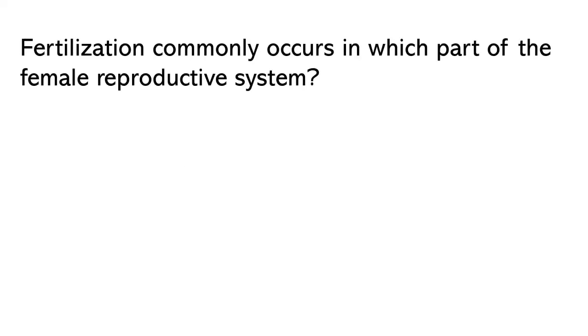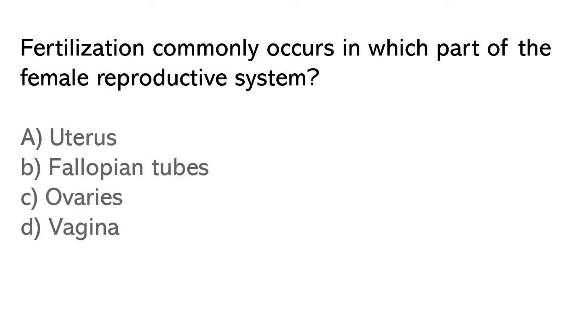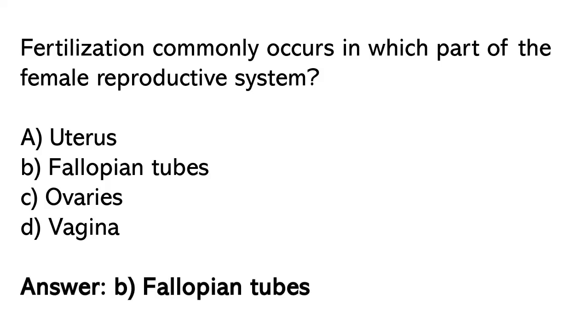Fertilization commonly occurs in which part of the female reproductive system? Options: A) Uterus, B) Fallopian tubes, C) Ovaries, D) Vagina. So the correct answer is option B.